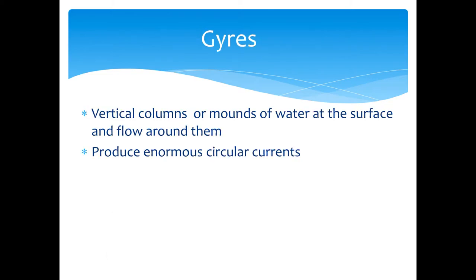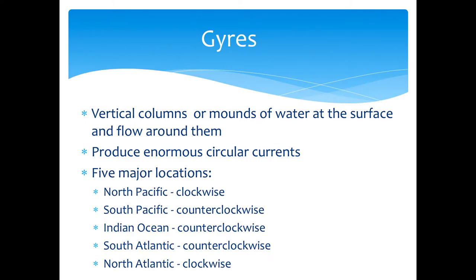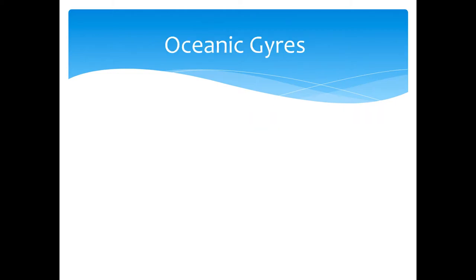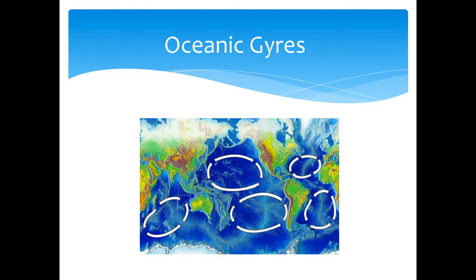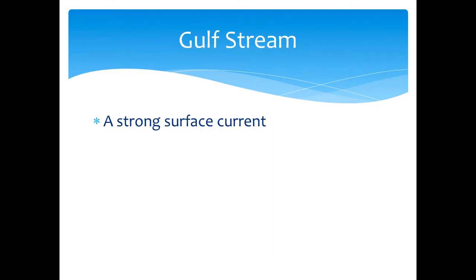Gyres — there's a lot of trash in the gyres because of how the currents are moving. A gyre is a vertical column or mound of water at the surface that flows around, producing enormous circular currents. There are five major gyres — you don't need to know all of them, just know that they exist.